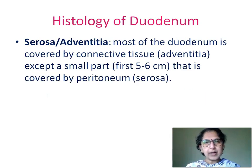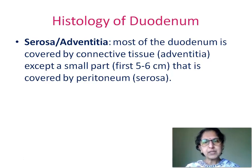Regarding serosa or adventitia: most of the duodenum was covered by connective tissue, i.e., adventitia, except for a small part — the first 5–6 cm — which was covered by peritoneum and was called serosa.